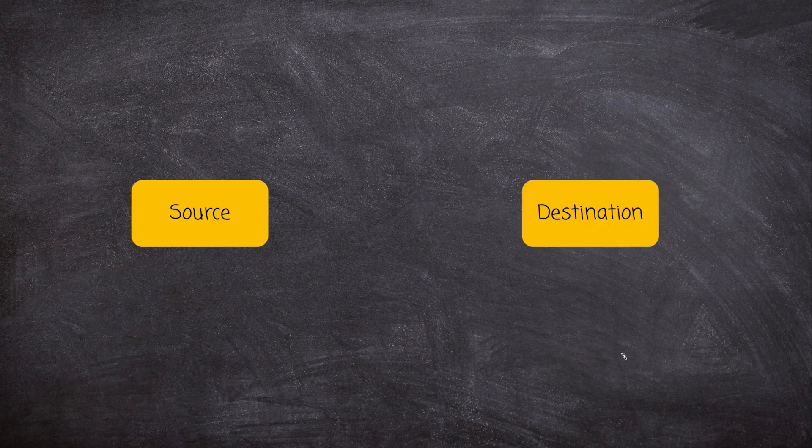We can have a source here that's maybe a file, a database — it doesn't really matter, there are many different sources. And then we would load that into a destination. Sometimes the destination can be the same as the source — same format, same data storage type, that sort of thing — but more often than not it's something different.